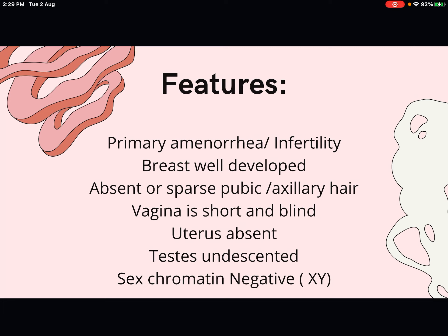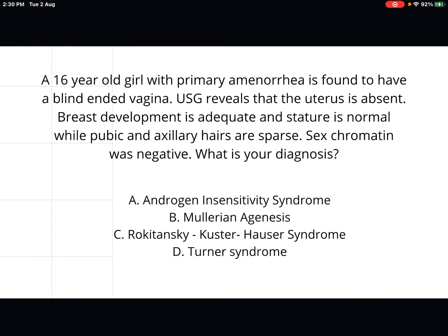To summarize the key terms: primary amenorrhea or infertility, breast development completely normal, absent or sparse pubic or axillary hair, short blind-ended vagina, absent uterus, undescended testes, and sex chromatin negative — because the karyotype is XY with only one X chromosome.